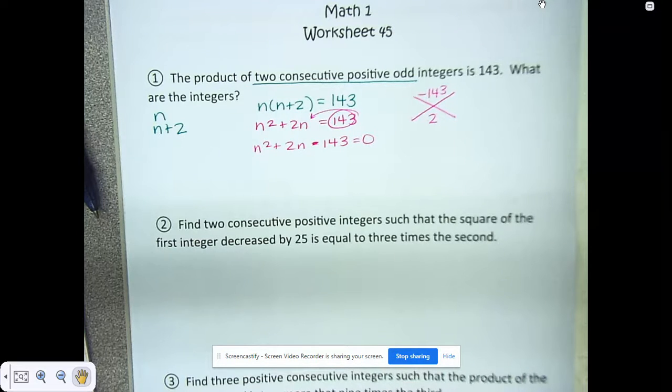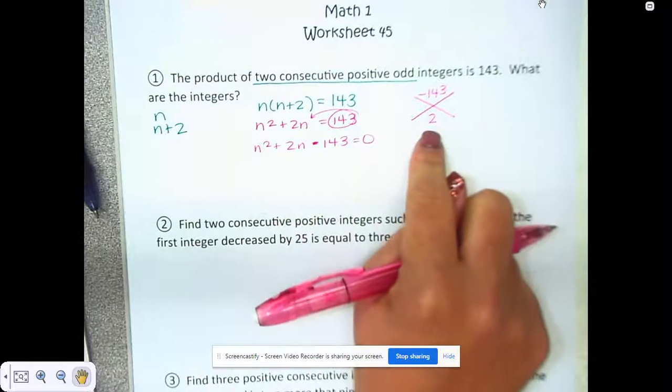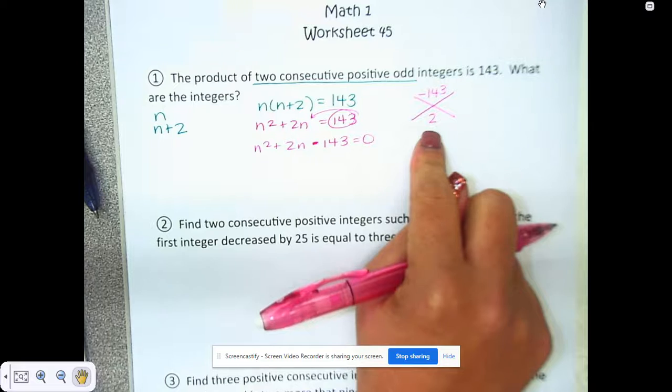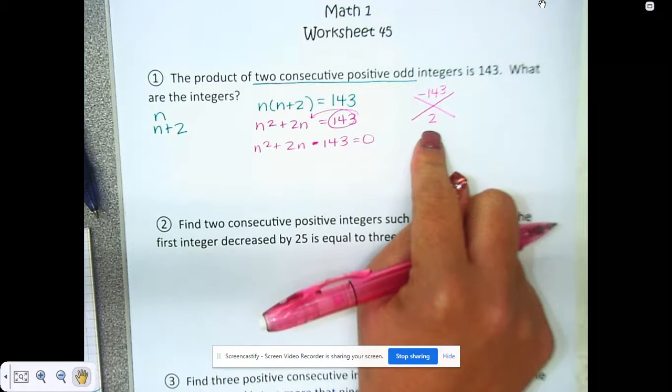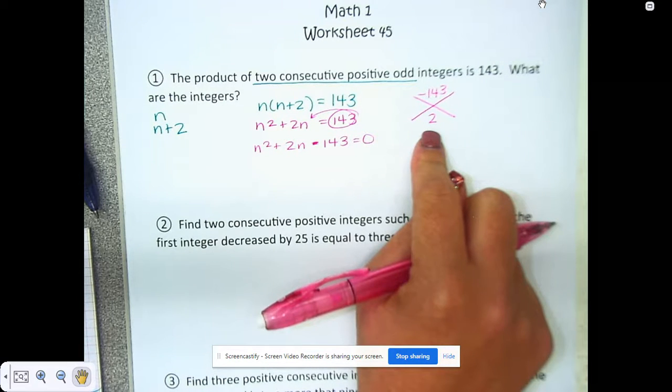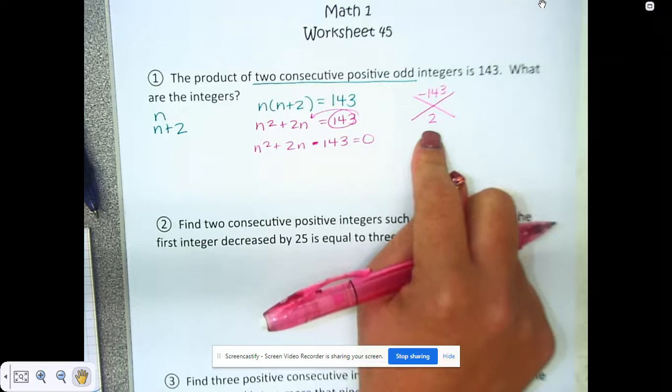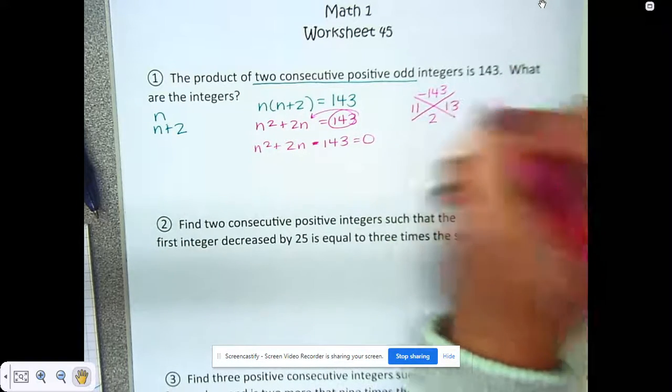You're really just going to have to trial and error here, but here's what I will say about that: you know that the difference between the two numbers has to be 2, so they have to be relatively close together. I wouldn't start with 3 or 4 because that's going to be a large number where the difference is not 2. The answers that we do have are 11 and 13.